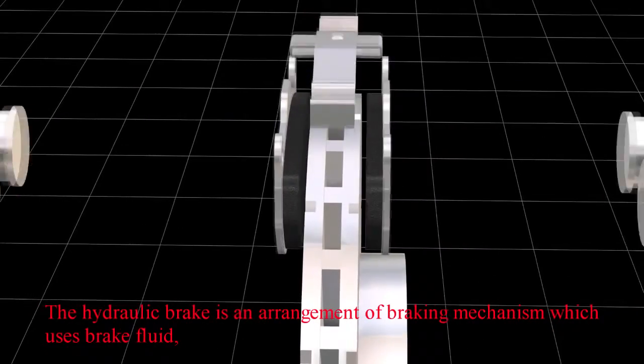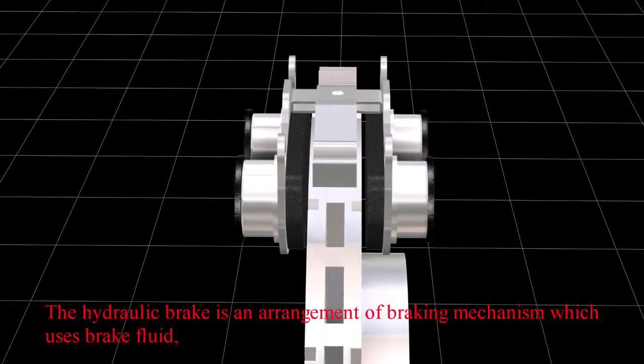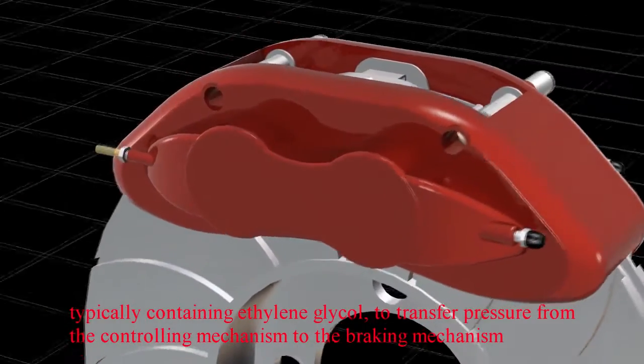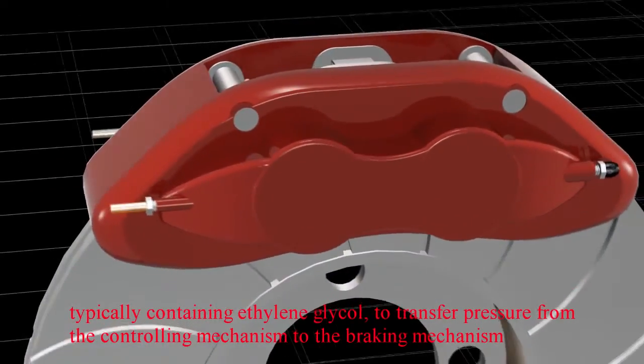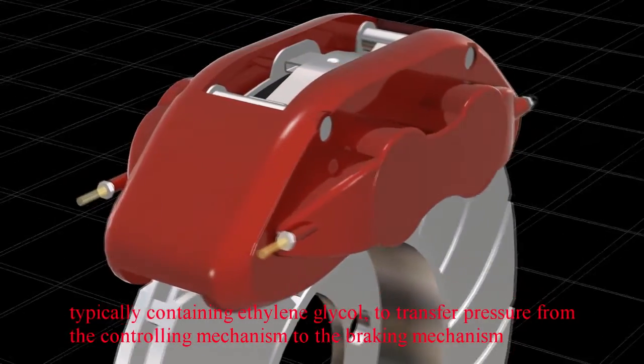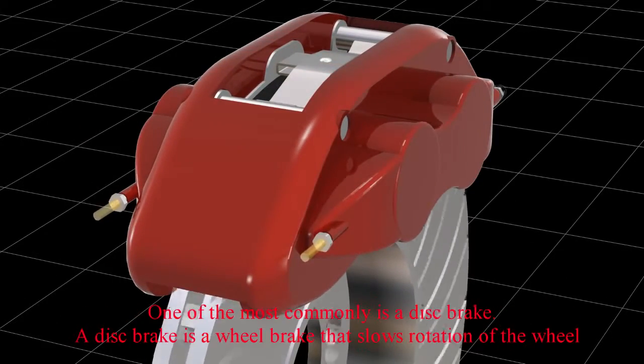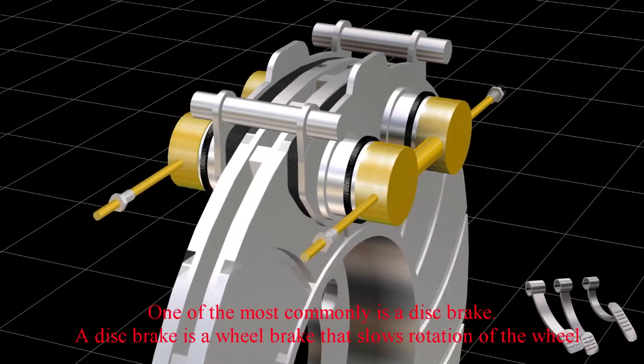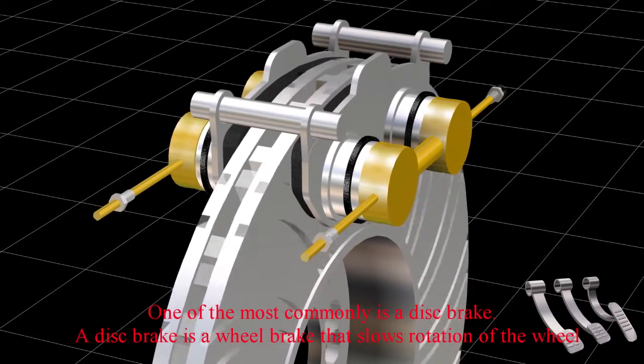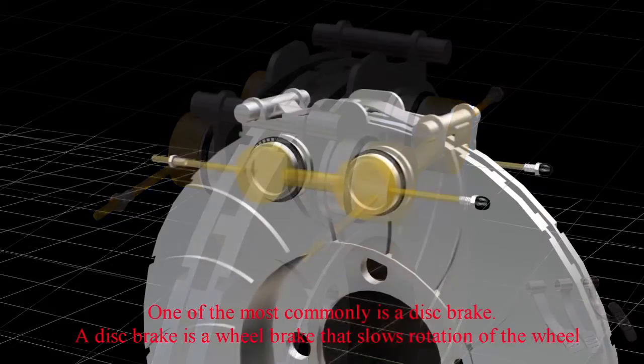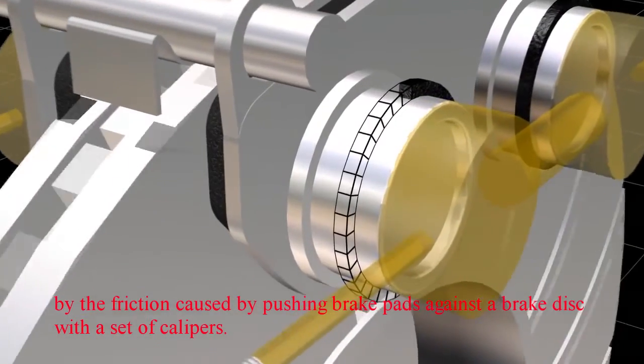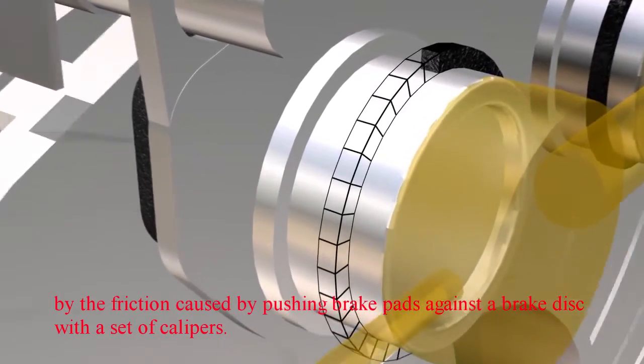The hydraulic brake is an arrangement of braking mechanism which uses brake fluid, typically containing ethylene glycol, to transfer pressure from the controlling mechanism to the braking mechanism. One of the most common is a disc brake. A disc brake is a wheel brake that slows rotation of the wheels by the friction caused by pushing brake pads against a brake disc with a set of calipers.